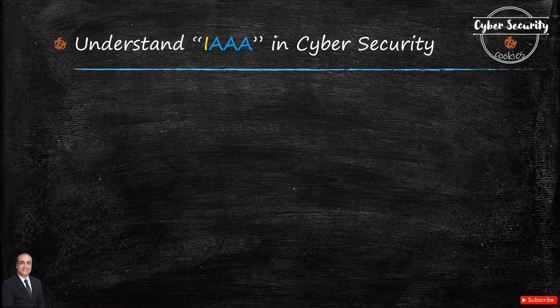Hello everyone and welcome to another exciting Learning Byte. Today we will discuss IAAA. If you have watched my last video, we discussed the CIA triad that stands for confidentiality, integrity, and availability. In continuation to that, today we will discuss the concept of AAA, that stands for authentication, authorization, and accountability. We will also understand what an identity is.